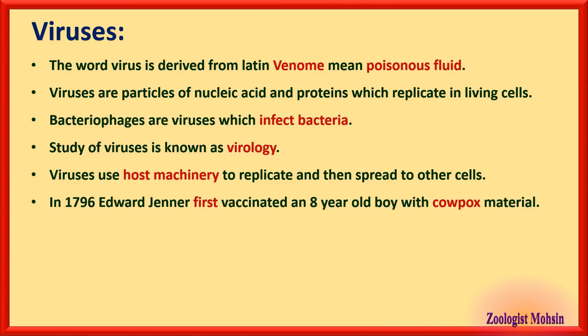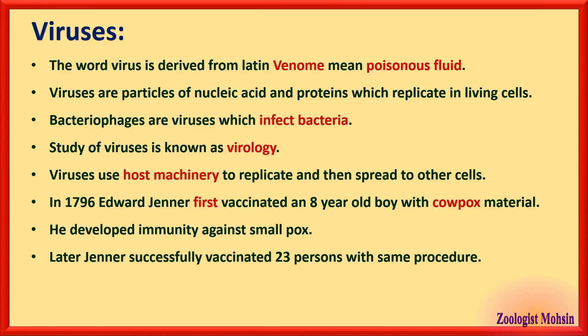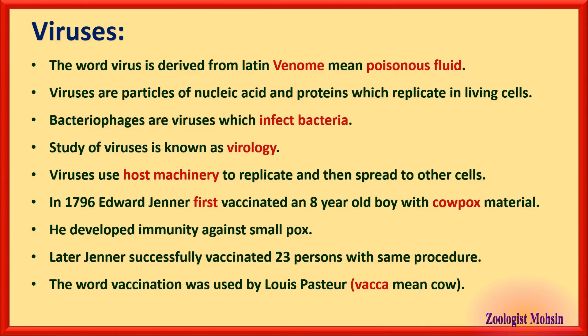In 1796, Edward Jenner first vaccinated an eight-year-old boy with cowpox material extracted from a cowpox patient; the boy developed immunity against smallpox. Jenner later successfully vaccinated 23 persons using the same procedure and smallpox did not affect them. The word 'vaccination' was coined by Louis Pasteur from 'vacca' meaning cow, because Jenner took the material from cows.